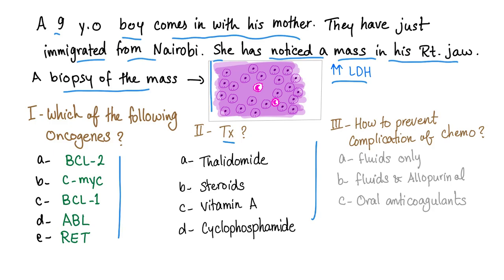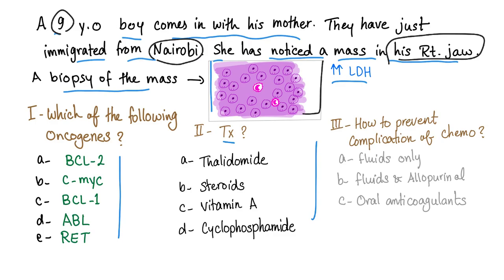Let's try to answer this. 9-year-old boy, emigrated from Nairobi — this is the capital of Kenya, so this is Sub-Saharan Africa. Mass in the jaw in a kid from Sub-Saharan Africa. The biopsy is showing starry sky appearance. This is Burkitt's lymphoma. That's easy.